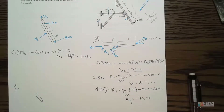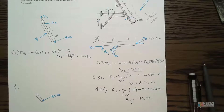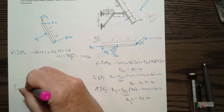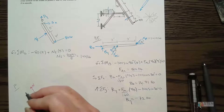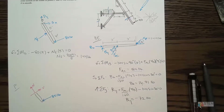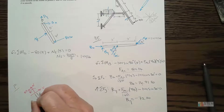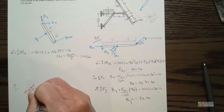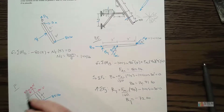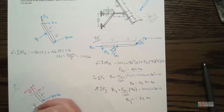Let's draw this out. We have 80 pounds external. For the internal ones: we're going to have a normal force normal to the cross section — I always draw it going out. We're going to have a shear, and then a bending moment MF. At this point it's just like an equilibrium problem. This distance here is two feet. Three unknowns, three equations. Let's define our coordinate system: this is X, this is Y.